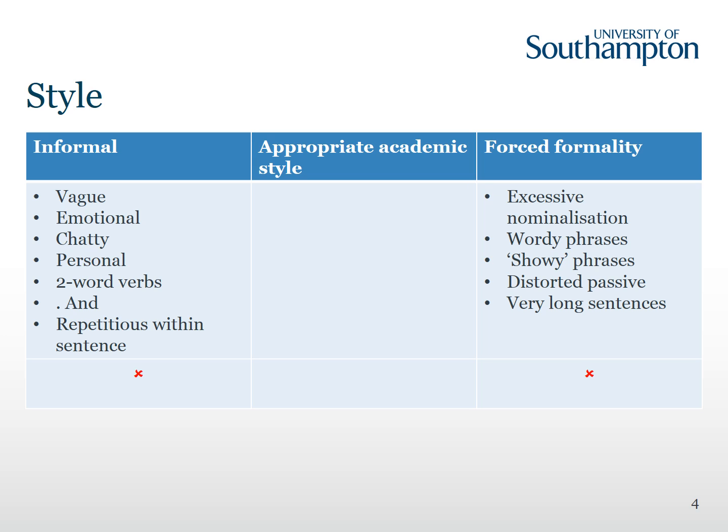In general, students tend to be more familiar with the risks of being too informal, but this can lead them to the next problem, which is forced formality and trying to be too formal. The first example of this is excessive nominalisation. Nominalisation basically means when you change a verb into a noun. If you do this too much it makes the writing harder to follow. So instead of saying the length increased — where increased is the verb — someone might write an increase in the length occurred.